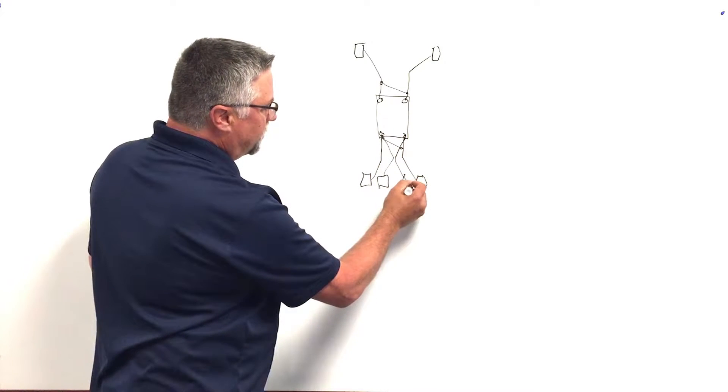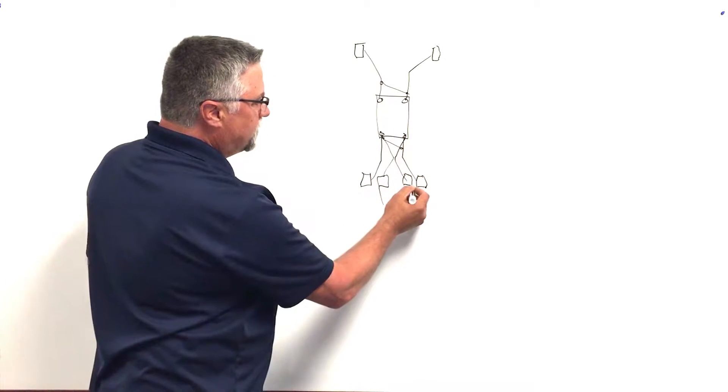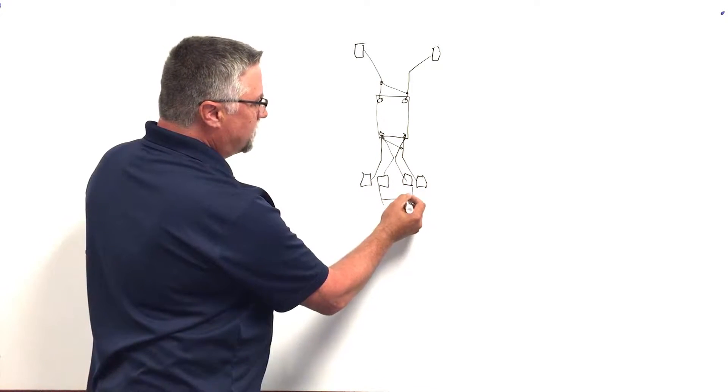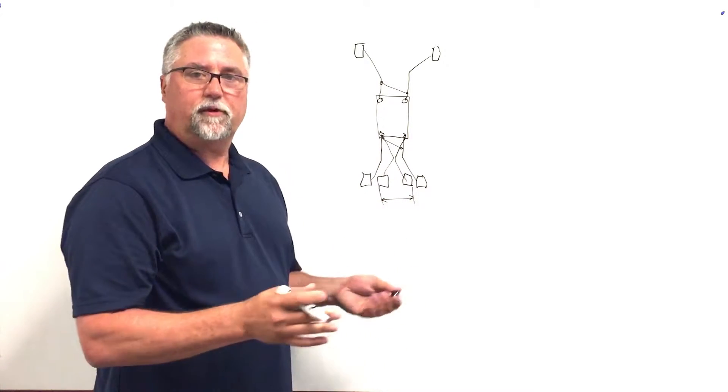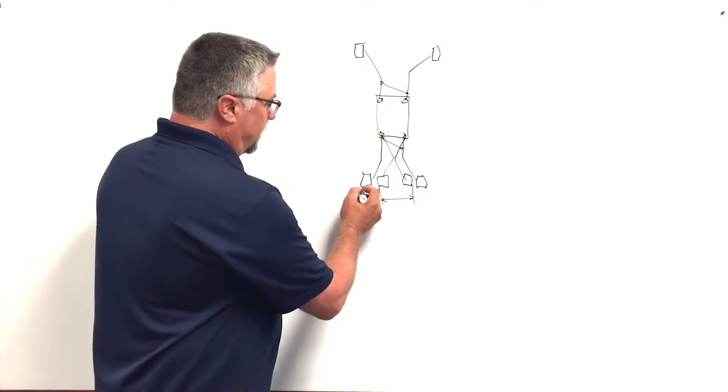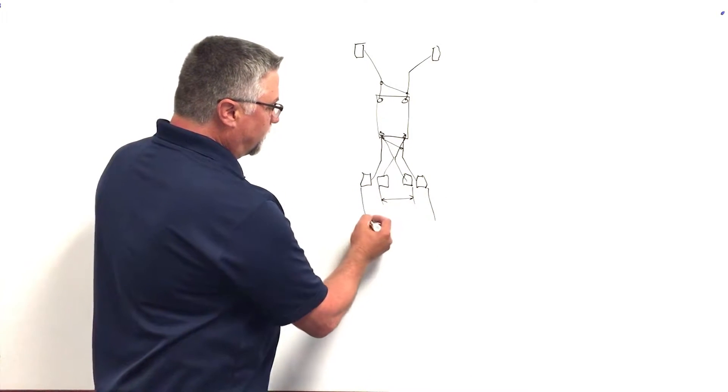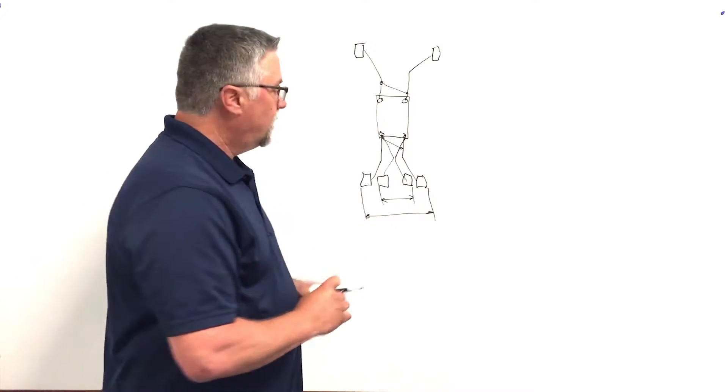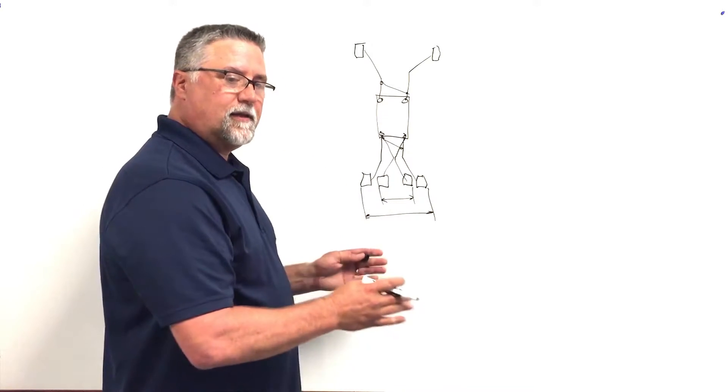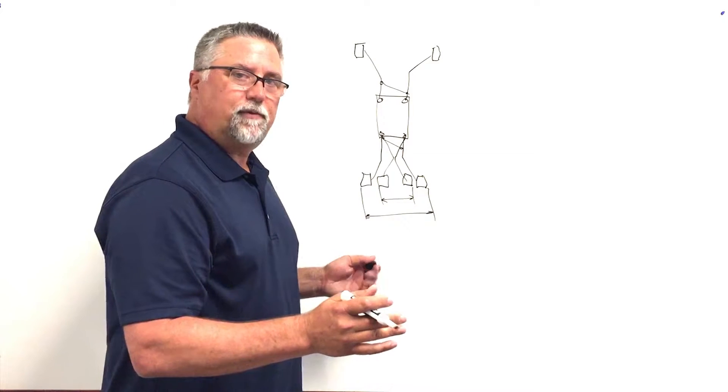They pivot and they go into two different positions. One position is the transport position, which you need to be able to put it on a truck. The next position is the working position. So when you unload the machine off the trailer, you push a button and the axles will go out to their working position.